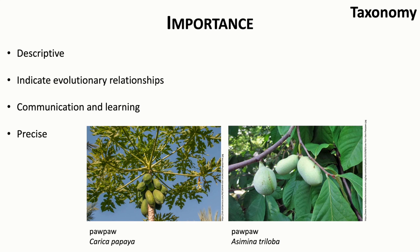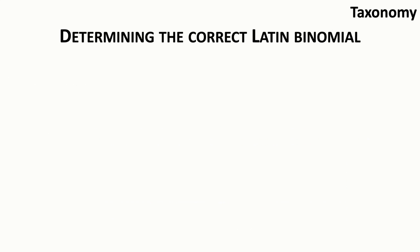Much confusion can arise when relying on common names, since two groups may use the same common name to refer to different plants, or different common names to refer to the same plant. For example, 'pawpaw' is a common name for each of two trees and their fruits — one we often refer to as papaya in the US, and the other is our native custard apple. If I was writing an ingredient label and just wrote 'pawpaw,' we wouldn't know which fruit the product actually contained. This is why it would be less ambiguous to accompany the common name with the Latin binomial.